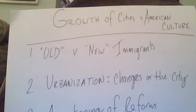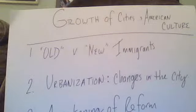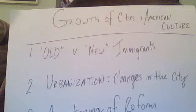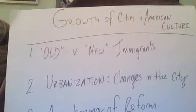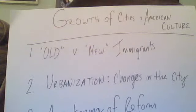Number three, religious persecution. For example, Jews in Russia were facing pogroms — essentially violent mobs attacking people of the Jewish faith. These are the push factors Europeans were experiencing in the latter part of the 19th century. As for pull factors drawing people to the United States: number one, a reputation for political and religious freedom; number two, a reputation for economic opportunity, especially with the settling of the Great Plains and the rise of industry in America — this land of opportunity is really going to draw people to our shores.